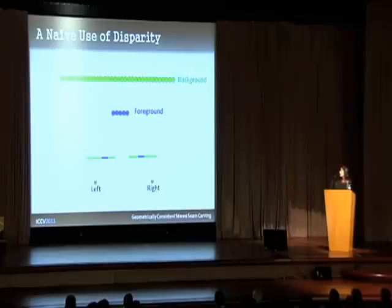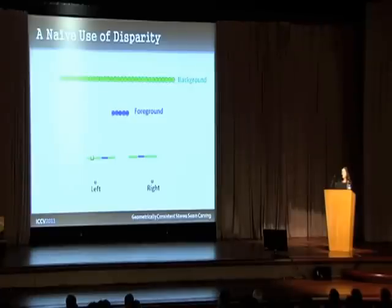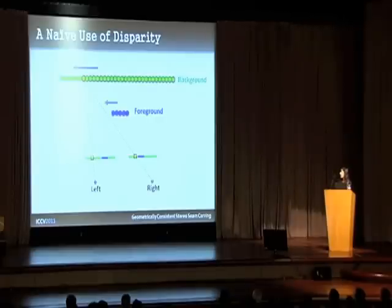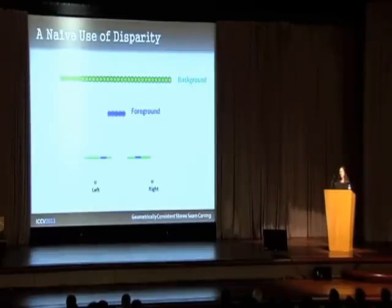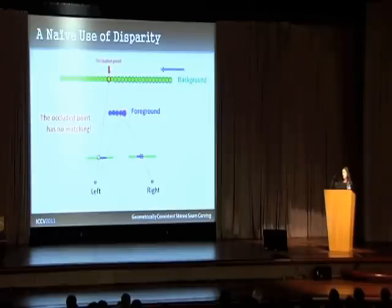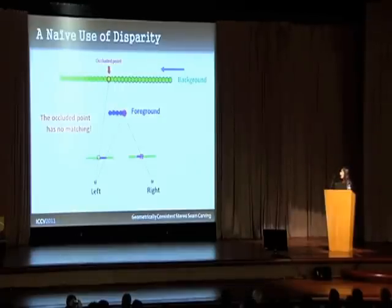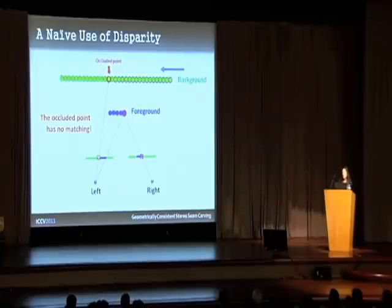Here is a 1D illustration of a simple scene with a background and a foreground object. If seam carving chooses to remove a pixel from the left image, using disparity coupling we remove the corresponding seams from the pair. So far, so good. But if we want to remove a pixel corresponding to a background point that is occluded by a foreground point in the right image, there is no matching in that situation. Even with a correct depth value, it results in an incorrect matching, so it is not clear which pixel should be removed in the right image. Occluded points are a problem.